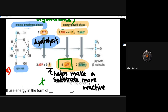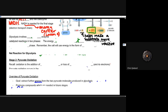This is just a brief overview of the general ideas of what's going to happen in glycolysis. Glycolysis involves a total of 10 enzyme-catalyzed reactions in two phases: the energy investment and the energy payoff phase. So 10 total enzyme-catalyzed reactions will take place in glycolysis, broken down into two steps — the investment and the payoff phase.